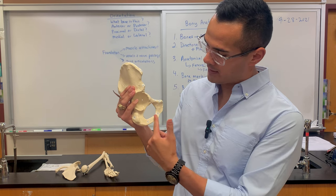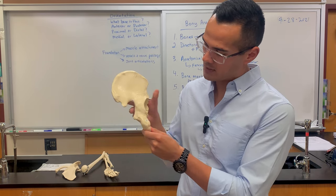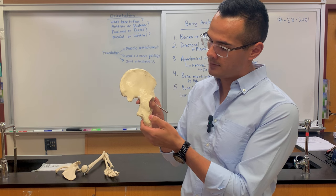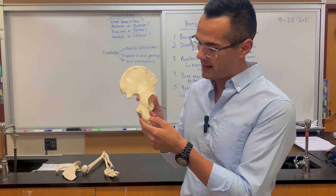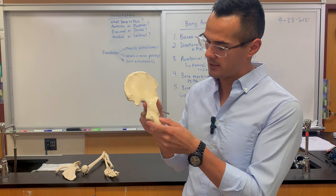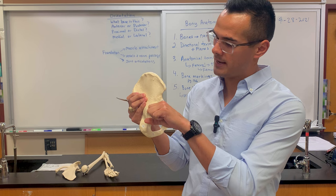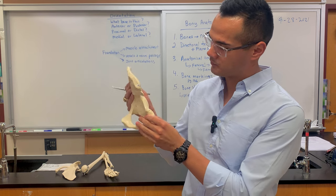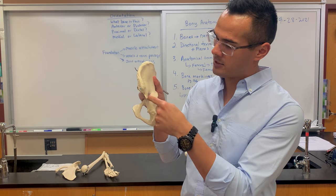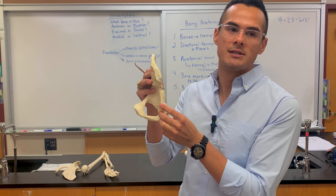Now in the ischium, number 10 is the ischial ramus. This projection is where the hamstrings attach — the part of bone you sit on — and it's known as the ischial tuberosity, not the ischial tubercle, because it's large. On the inside is the acetabulum, where the head of the femur articulates. From a posterior view, this is the sciatic notch where the sciatic nerve passes through, and this is the ischial spine.